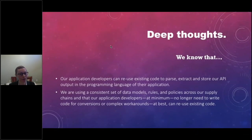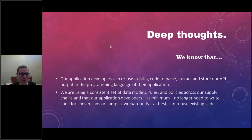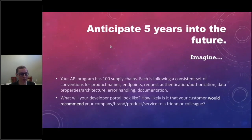In our deep thought series: application developers can now reuse existing code to parse, extract, and store API output in their programming language. We're using a consistent set of data models, rules, and policies across our supply chains, so developers at minimum no longer need to write code for conversions, and at best can reuse their existing code for new API integrations.